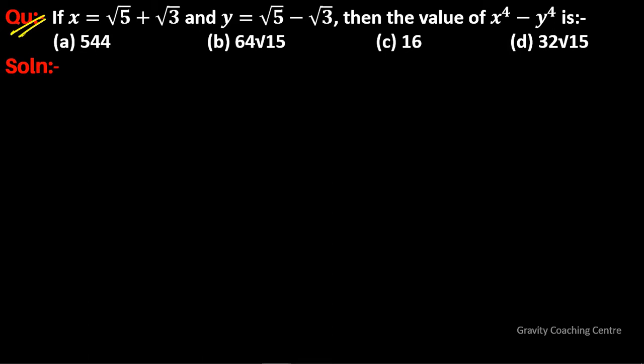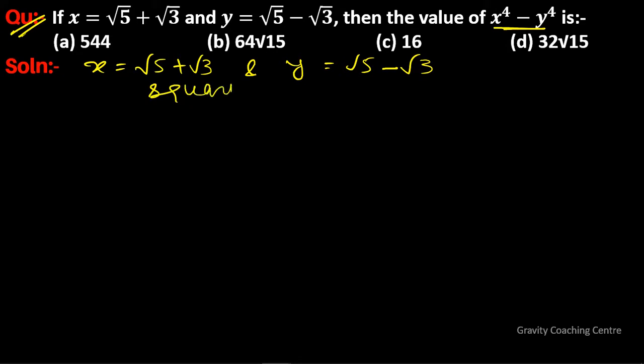If x equals root 5 plus root 3 and y equals root 5 minus root 3, find the value of x to the power 4 minus y to the power 4. Given these values, we square both sides.